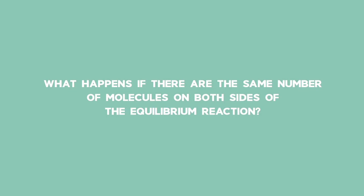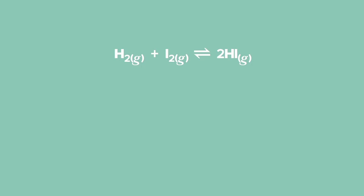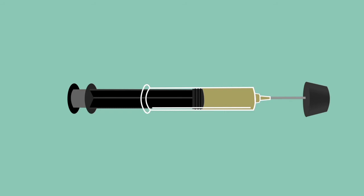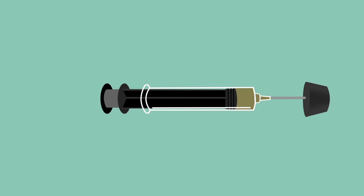What happens if there are the same number of molecules on both sides of the equilibrium reaction? Increasing the pressure has no effect on the position of the equilibrium, as there are the same number of molecules on both sides — the equilibrium cannot move in any way to reduce the pressure. An example is a reaction with two moles on the right-hand side and two moles on the left. In a pressure practical, if the container is made smaller, the reaction making fewer molecules is favoured. We can see this because the container goes darker as NO₂ is squeezed together, but then the colour goes lighter, showing N₂O₄ is being made.